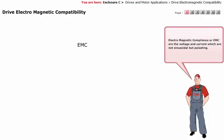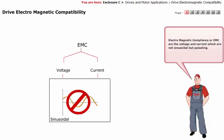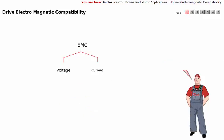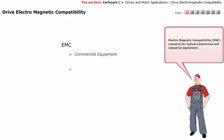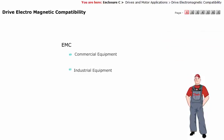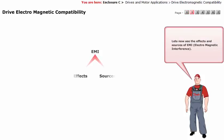Electromagnetic compliance, or EMC, refers to voltages and currents which are not sinusoidal but pulsating. Electromagnetic compatibility (EMC) concerns are typical for commercial and industrial equipment. Let's now see the effects and sources of EMI — electromagnetic interference.